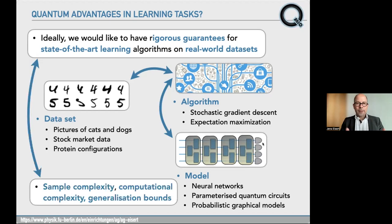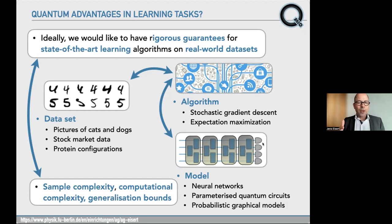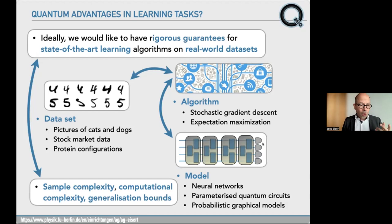What does quantum advantage mean? It could mean taking data — pictures of cats and dogs — and needing fewer samples to accomplish the same learning task; that would be an advantage in sample complexity. We could also think of a computational advantage, where the algorithm performs faster in the quantum world than the classical world. Or we could have an advantage in generalization bounds — bounds that guarantee performance on unseen data. These are all meaningful ways in which a quantum-assisted algorithm could possibly be better than a classical one.